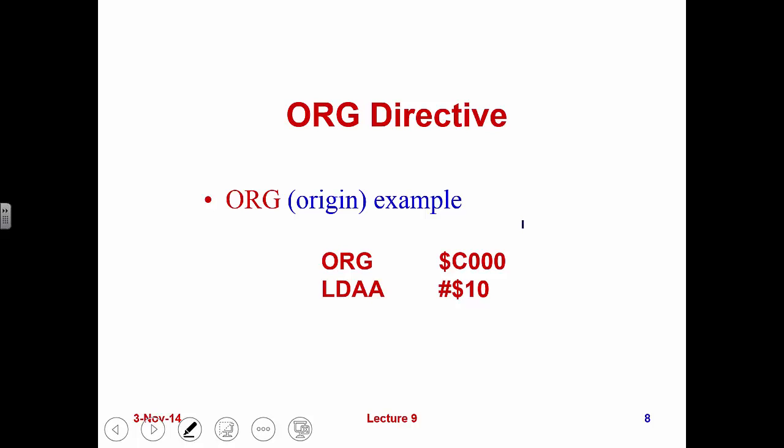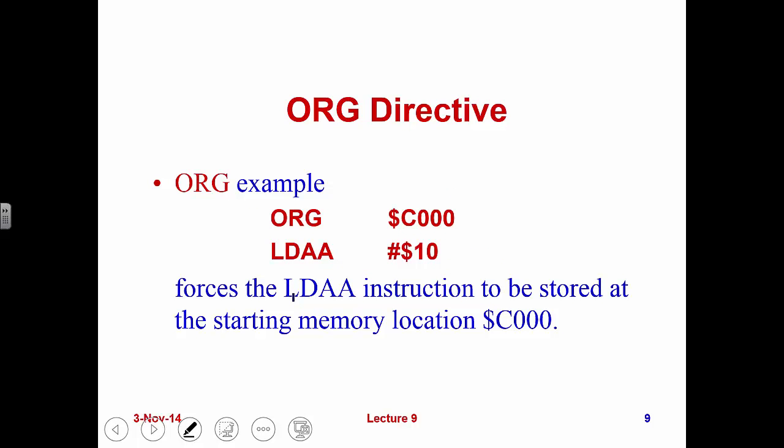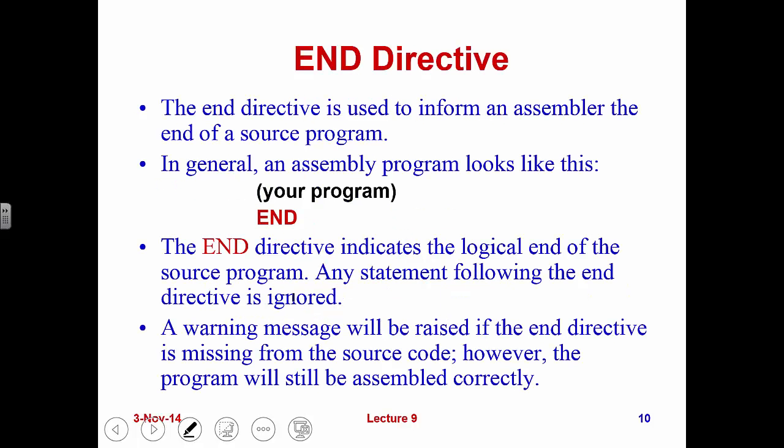Here's another example. After ORG we don't have data directives, we have an instruction — for example, Load A. When the assembler does the assembly process, the machine code of this program is stored at C000, which should be the machine code for loading the accumulator. So everybody should remember what the machine code for LDA is — we can check it from the book.